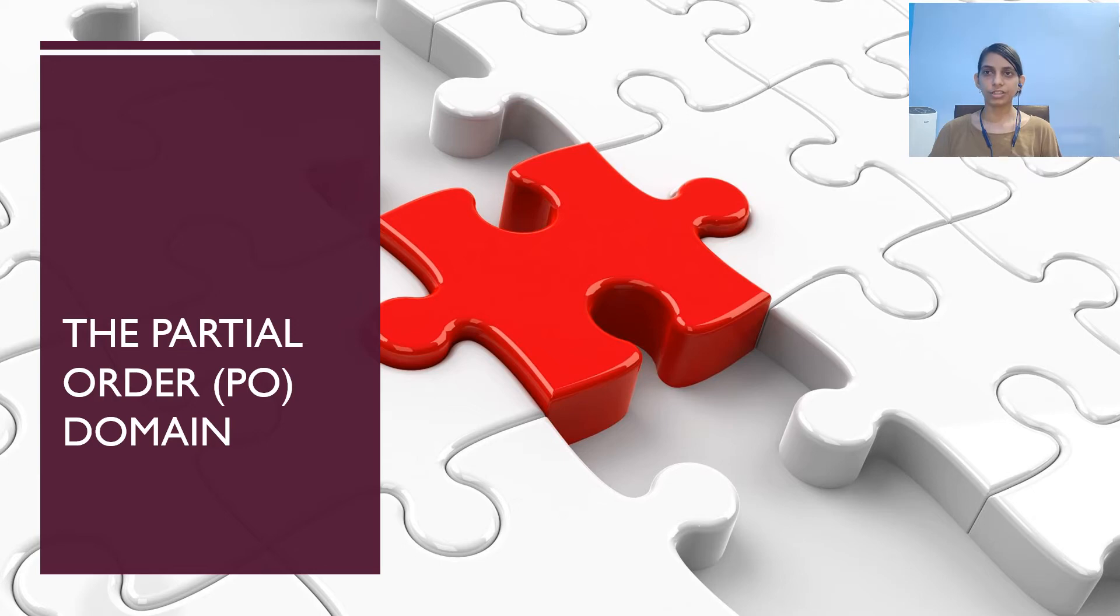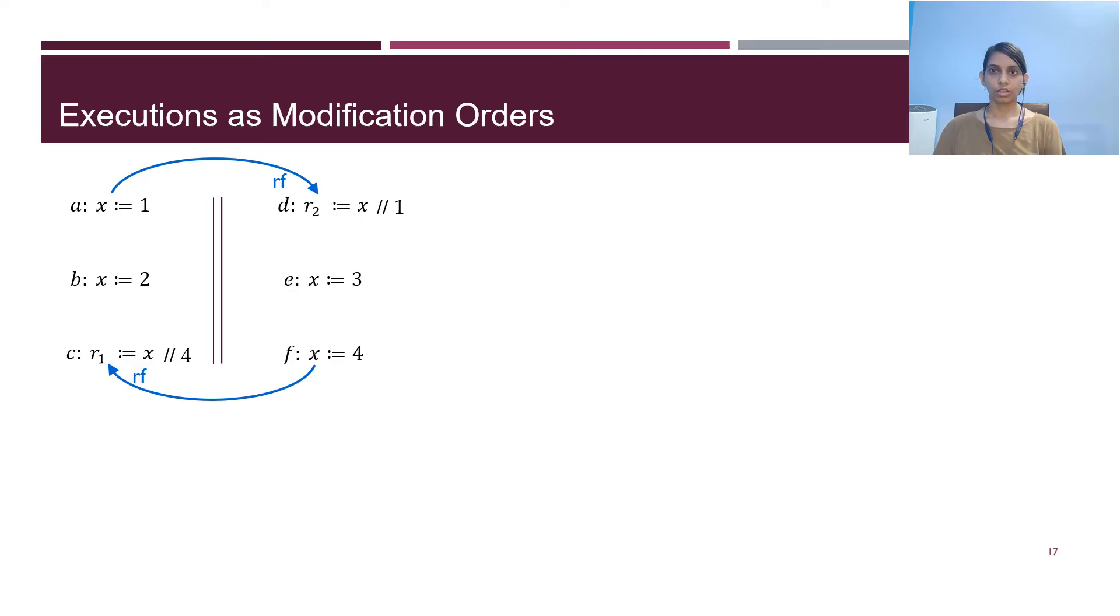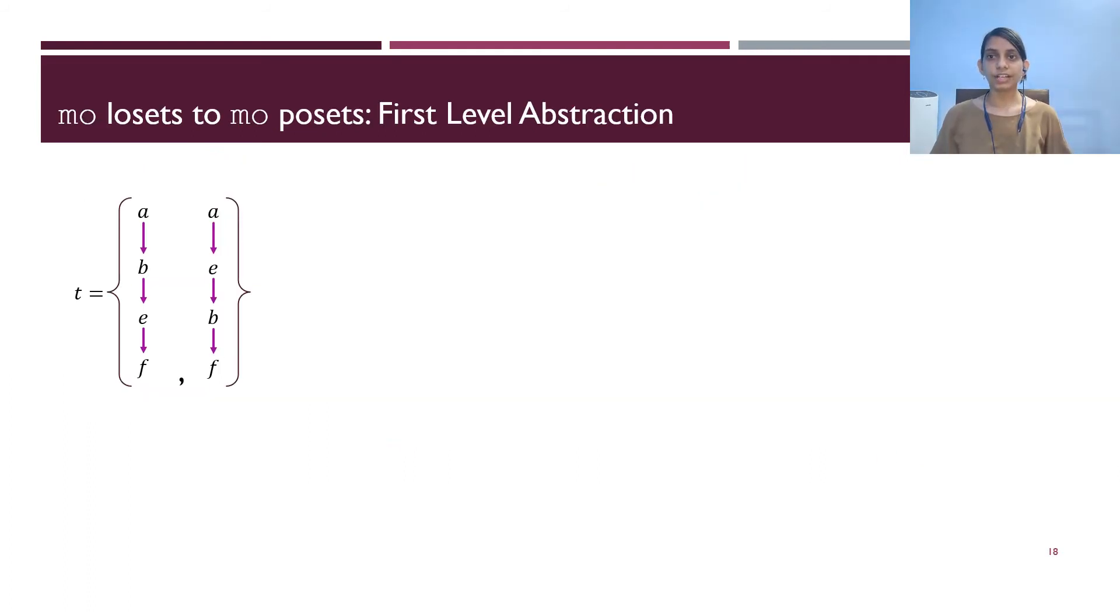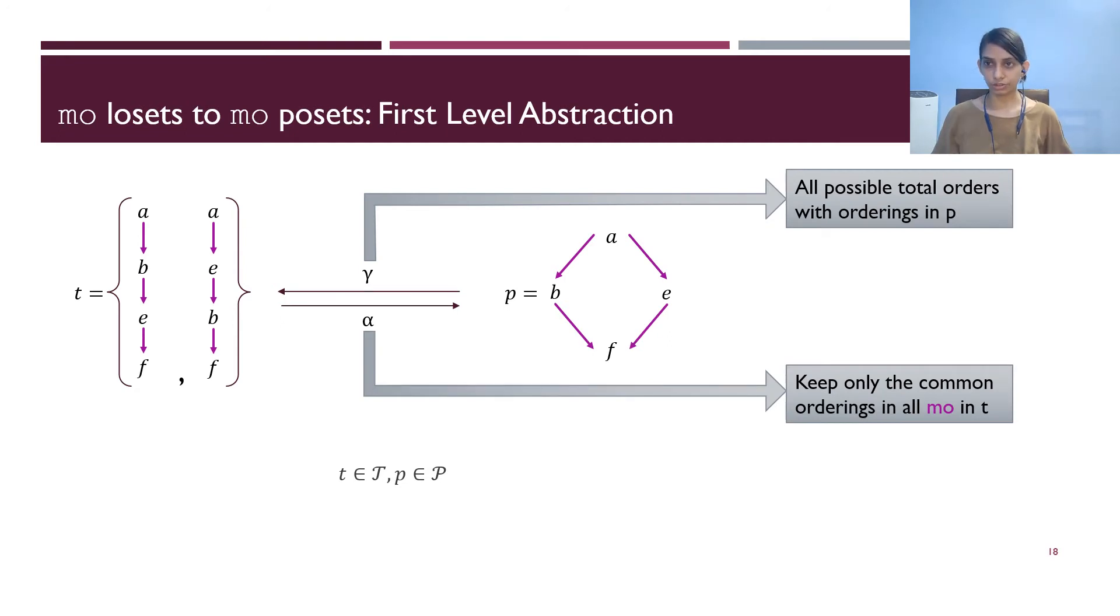The main contribution of this work is a novel abstract domain PO domain. This domain is used to keep abstracted ordering information in the program state. In this example, a valid execution corresponding to the depicted RF relation can have two possible MOs. First, with the ordering A, B, E, F and second with ordering A, E, B, F. A set of executions with these RFs can be represented by a set consisting of MO1 and MO2. We use this set of MOs and abstract it to a PO as our first level abstraction. We have defined alpha abstraction function and gamma concretization function. Our abstraction function alpha keeps only the common orderings in all the MOs in T and concretization function gamma enumerates all possible total orders that consist orderings in P.